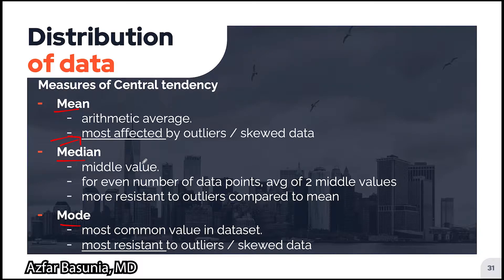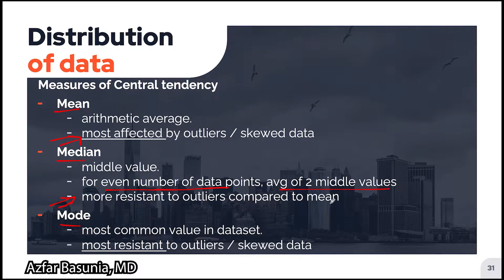The median describes the middle value of the data set. If we have an even number of data points, the average of the two middle values gives the median, and the median is more resistant to outliers compared to the mean. The mode is the most common value in the data set, and it is the most resistant to outliers or skewed data compared to the mean or the median.